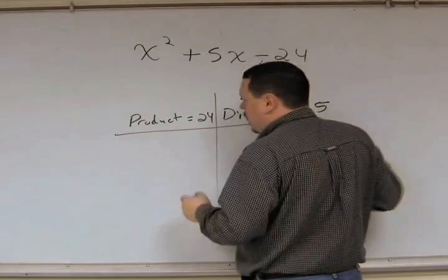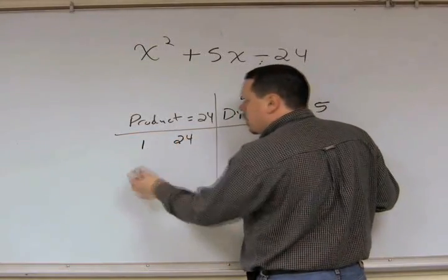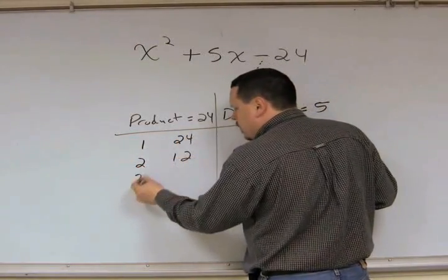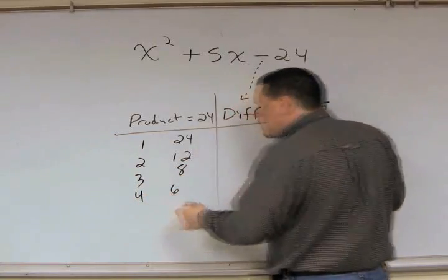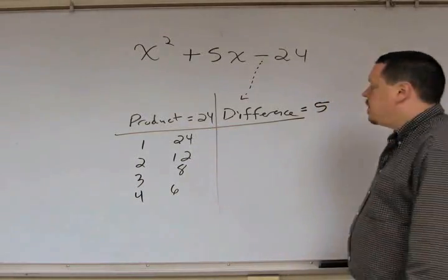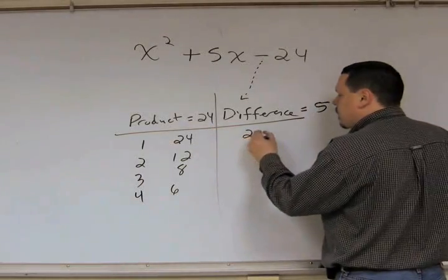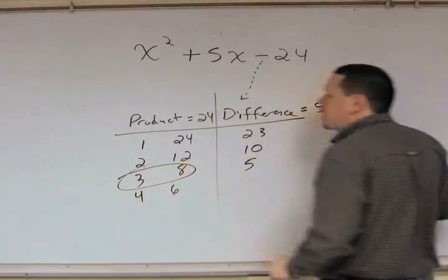So, we need to find the product two numbers is 24. So, we go through the process, 1 and 24, 2 and 12, 3 and 8, 4 and 6. 5 doesn't go into 24, but 6 does, but now we're starting up on the right-hand side. Look at the differences, 23, 10, 5. We got our pair. There it is.